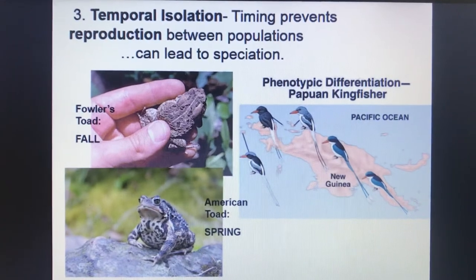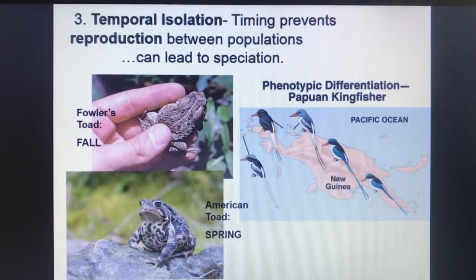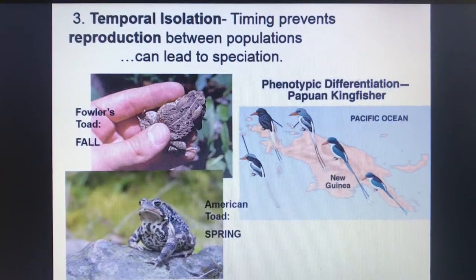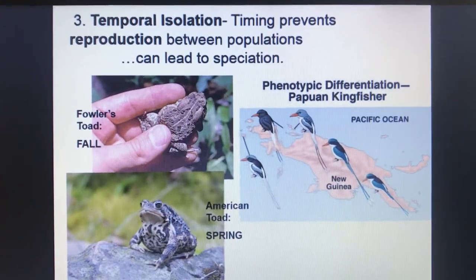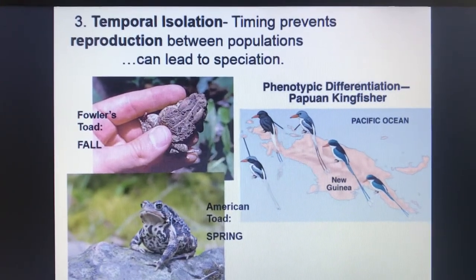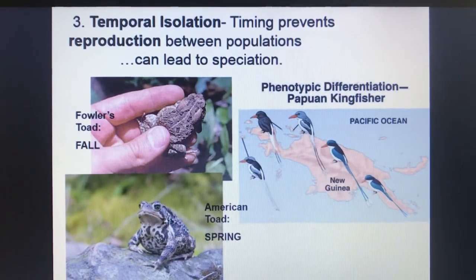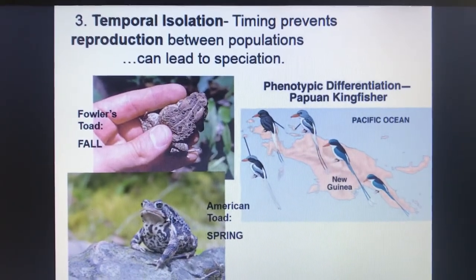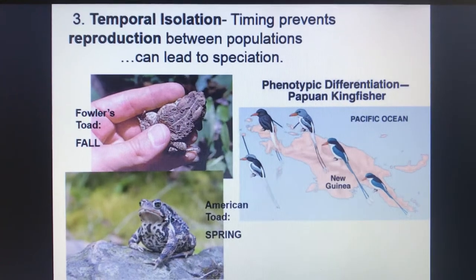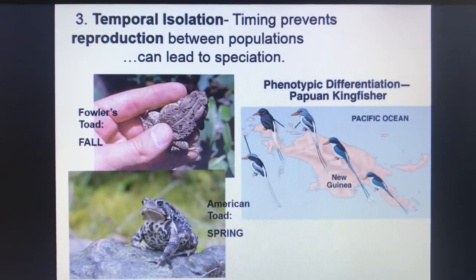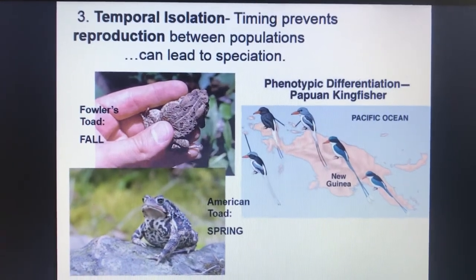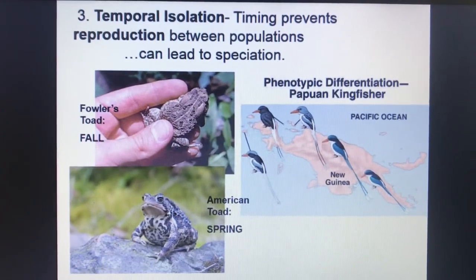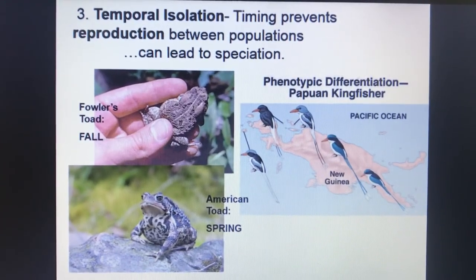Another type of reproductive isolation is known as temporal isolation, which is about timing. The Fowler's toad, which is very similar to the American toad, has separated into distinct species by mating time — the Fowler's toad mates in the fall only and the American toad mates only in the spring. The same can be seen in Papua New Guinea with all the kingfisher birds, deriving new speciation.